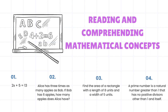Number two: find the area of a rectangle with a length of eight units and width of five units. A prime number is a natural number greater than one that has no positive divisors other than one and itself. These are now many like this one for the entire equation in the building — the concept.